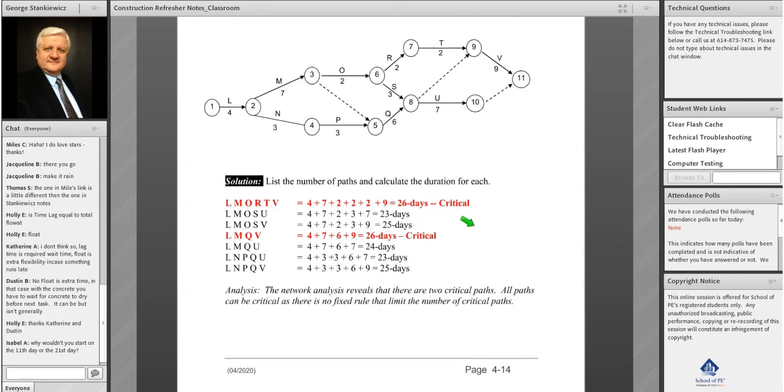There's no shortcut to this. You have to do what we just did in the previous example: identify all the paths, calculate the duration for each of the paths, and then find the critical path, which is the longest path through the network. So you see that we have seven paths.